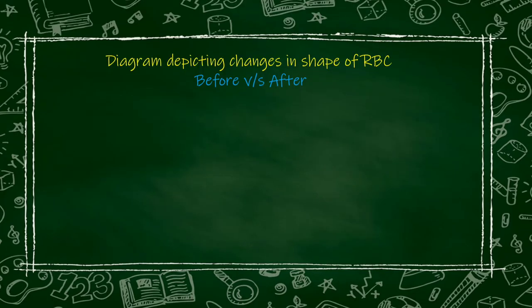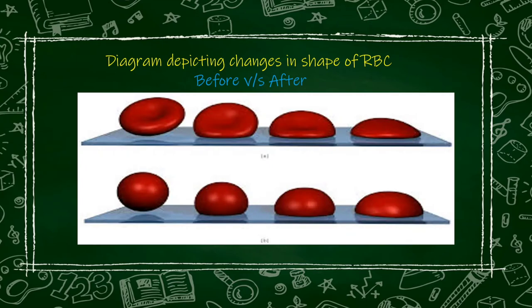Comparing before and after: previously the RBC was biconcave in shape with a depression in the middle. The RBC membrane was flat and would easily pass through capillaries. But after hereditary spherocytosis, the RBC becomes spherical and can no longer easily pass through capillaries. This is the morphological change — before it was biconcave, after it becomes spherical.